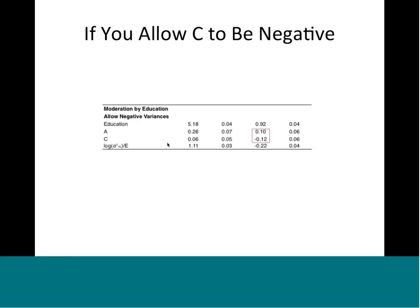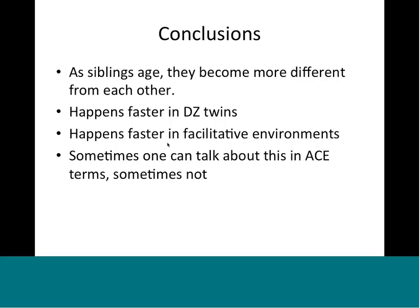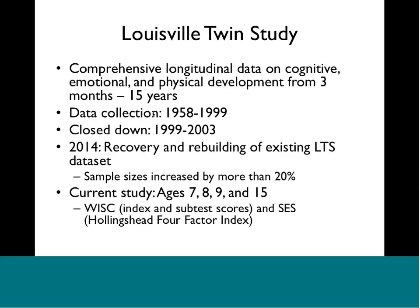The ACE model was disallowing the effect — we couldn't see our own phenomenon. It comes back when you allow the dominance variance component to be negative. The conclusion is that as siblings age they become more different from each other, and twin correlations for almost everything go down as kids grow up. That process happens faster in DZ twins, and especially faster in DZ twins raised in good environments.